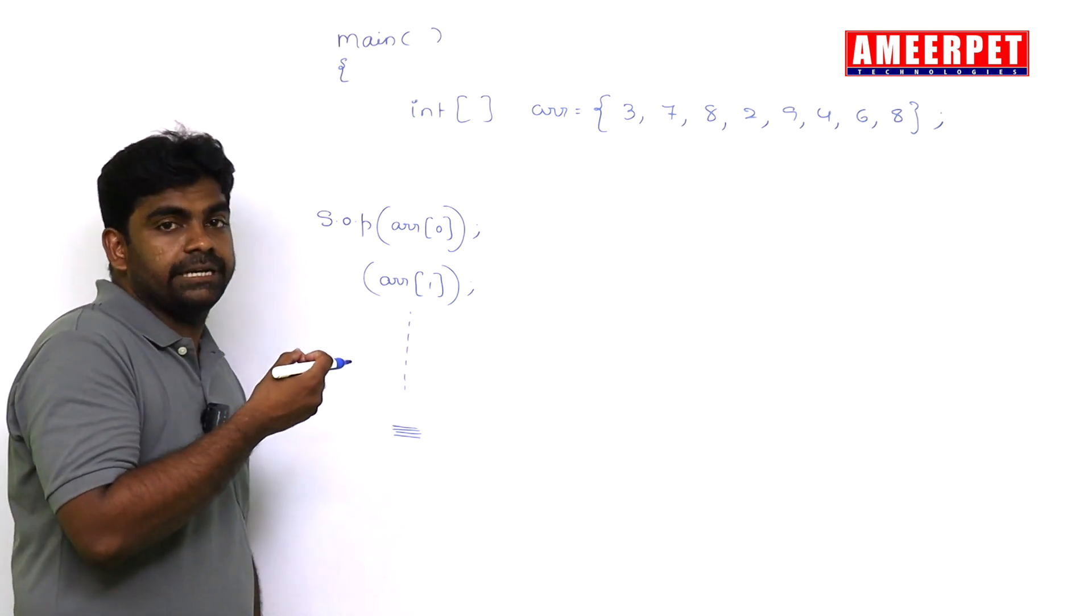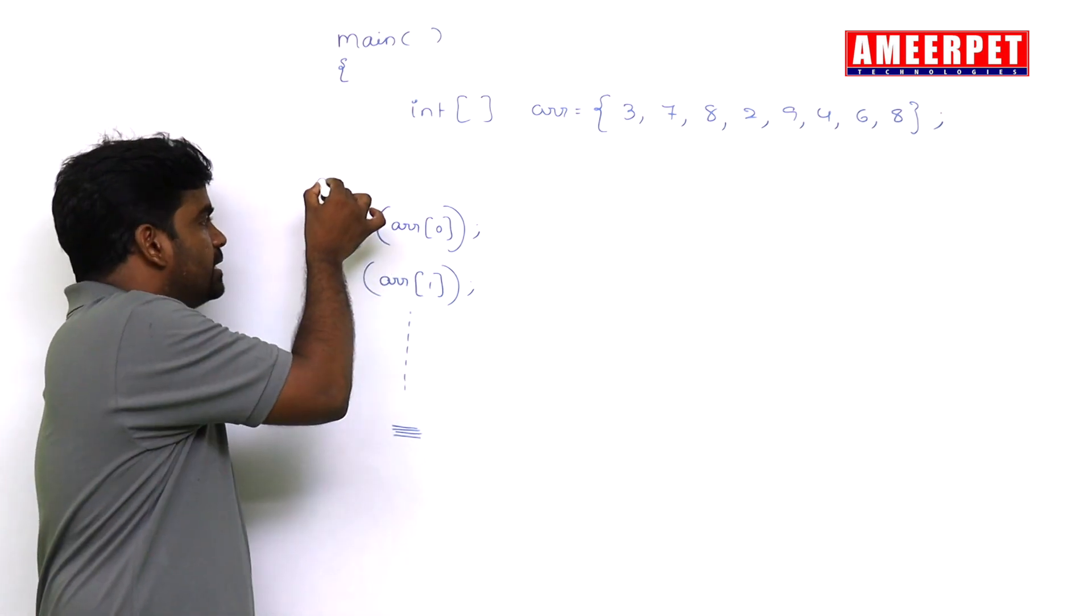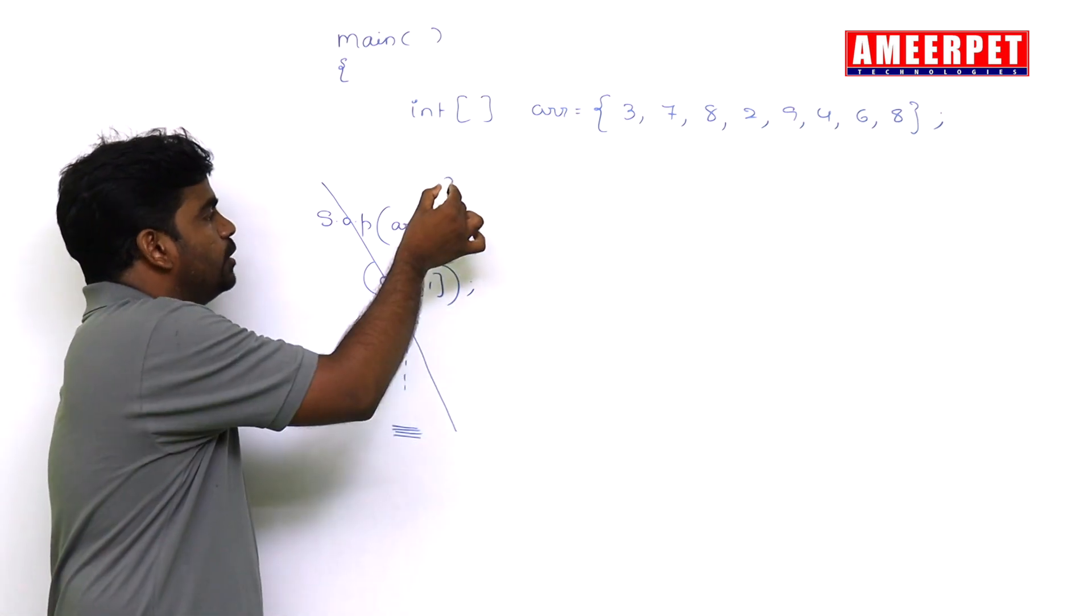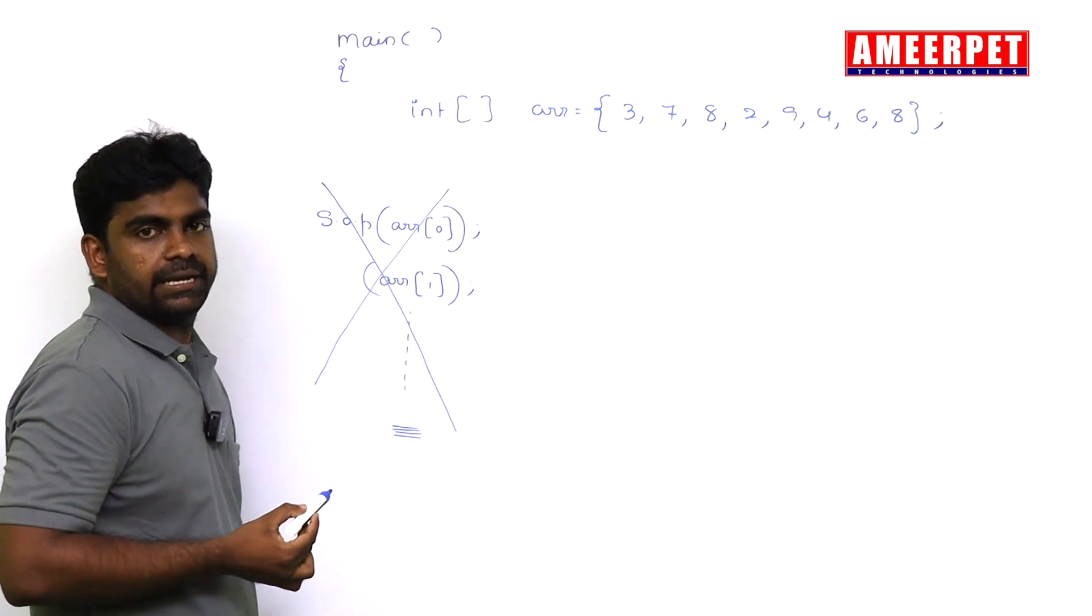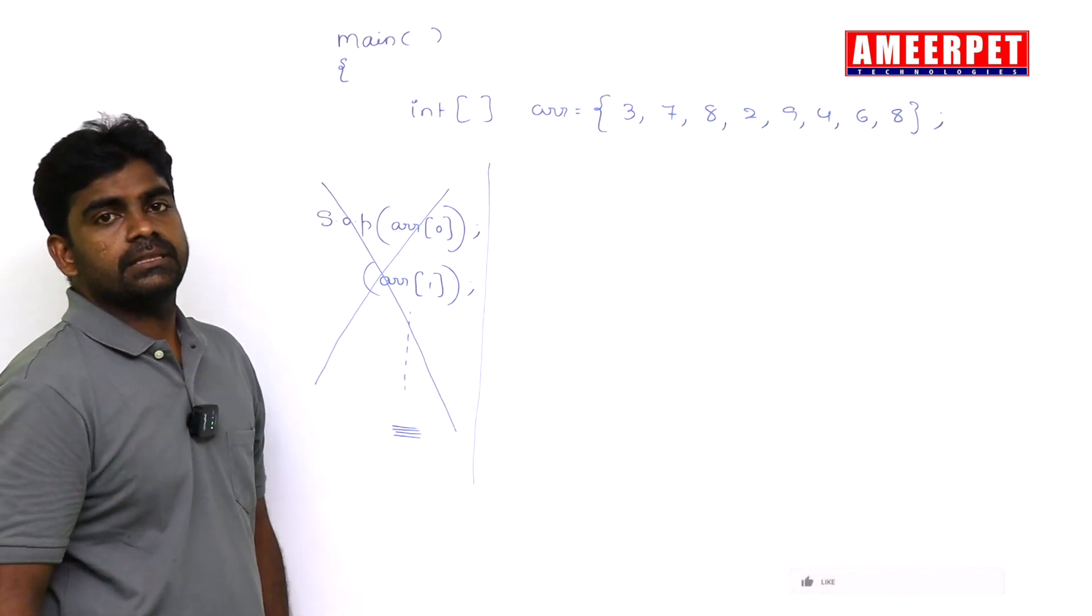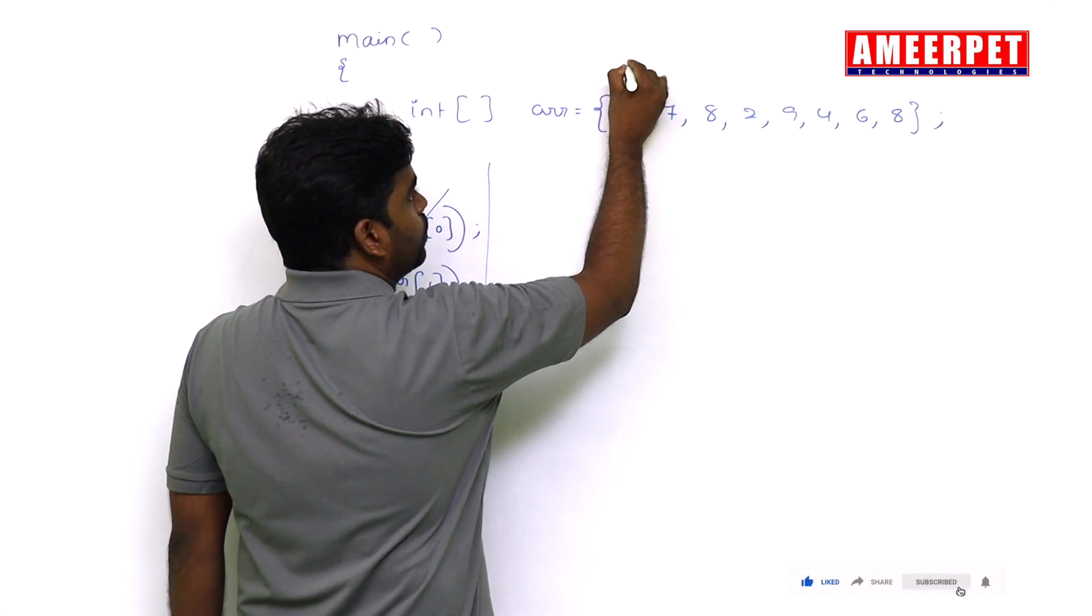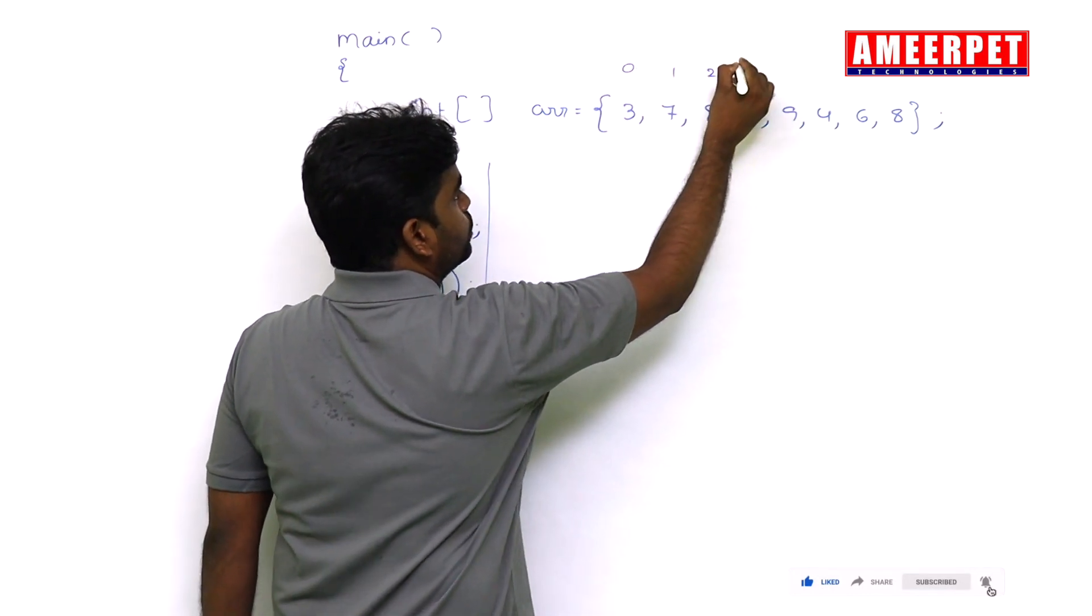So it is not at all recommended to display elements of array using sop statements. Then how to display? Simple. Indexing starts with 0, 1, 2, 3, 4, 5, 6, 7.